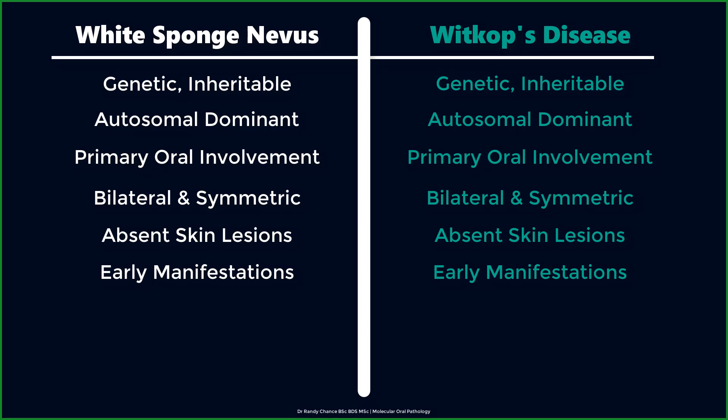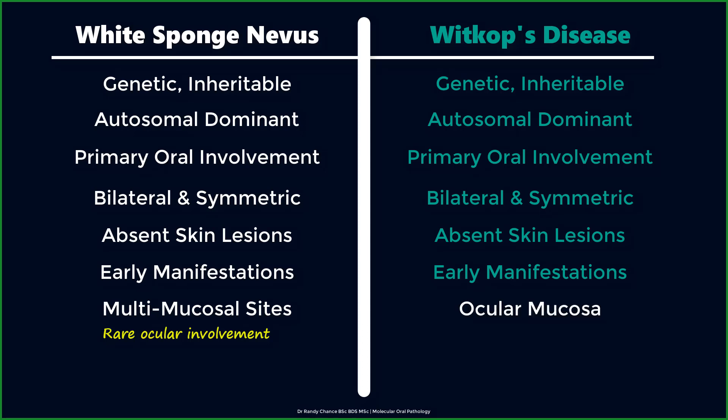The crucial difference to note is that whereas white sponge nevus may additionally and in fact frequently involve a number of extraoral mucosal sites — oropharyngeal, laryngeal, anogenital, vaginal, and rarely the conjunctiva — Witkop's disease limits its extraoral manifestation to just the ocular system, typically affecting the conjunctiva and the area surrounding the cornea.